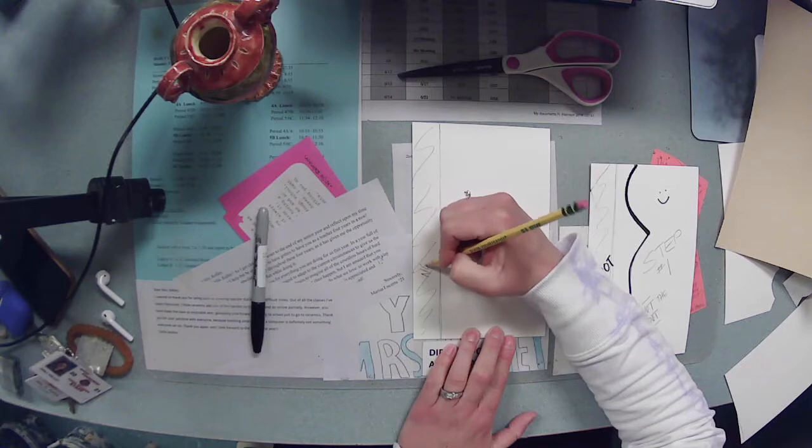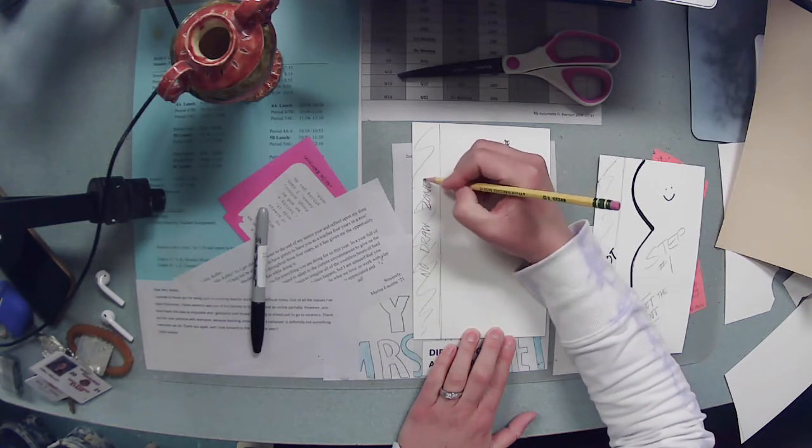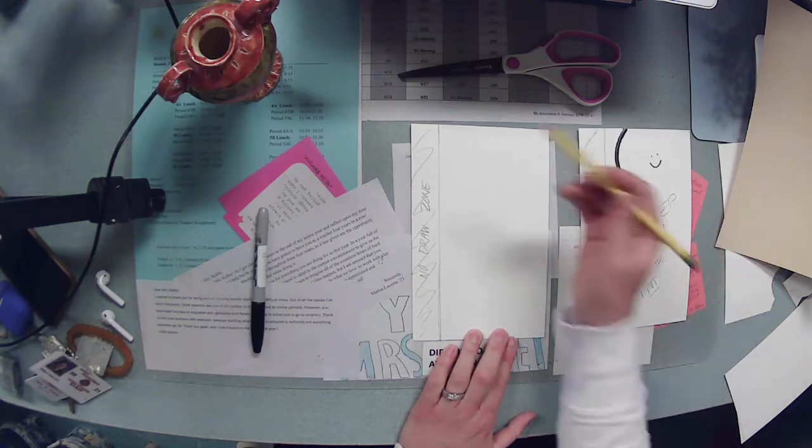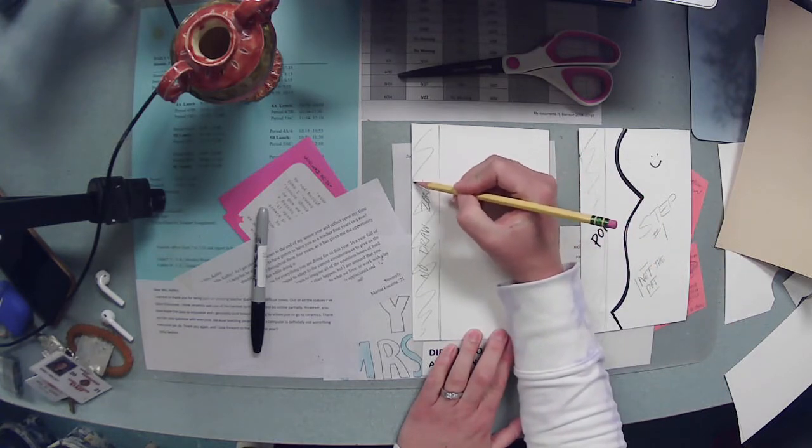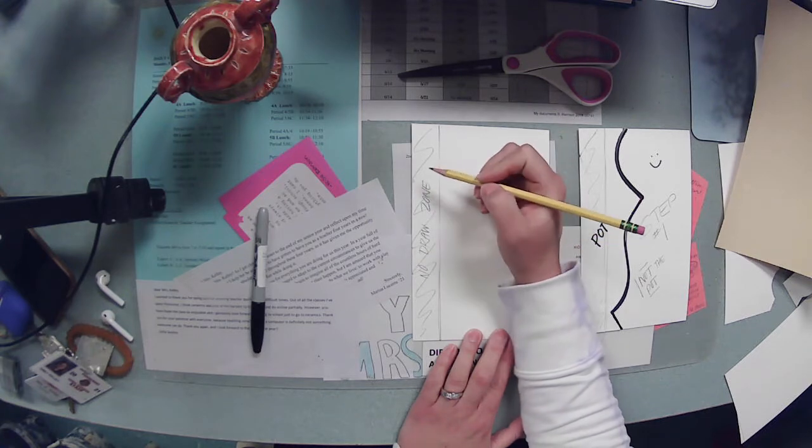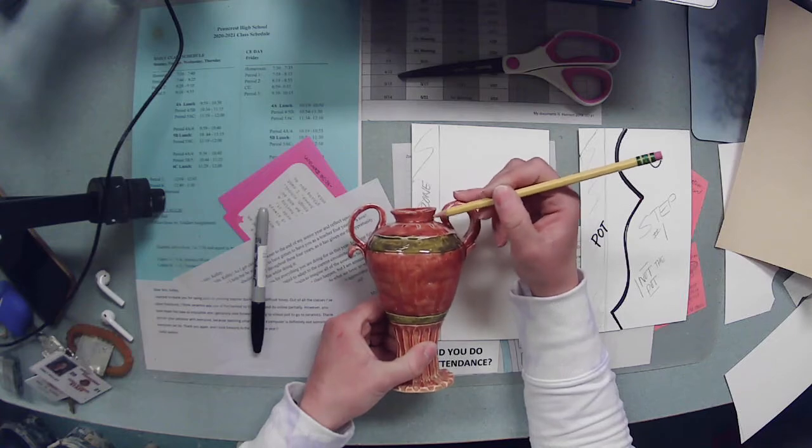We do that because as I'm drawing the silhouette of the pot, if I approach too close to the edge of the piece of paper, that means that area of my pot will be too narrow.